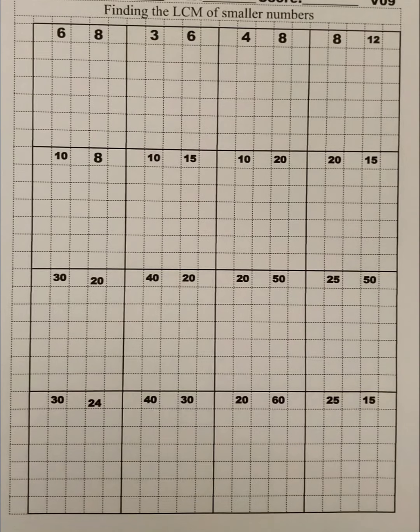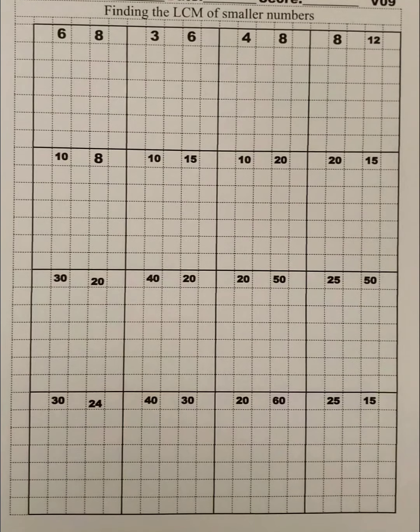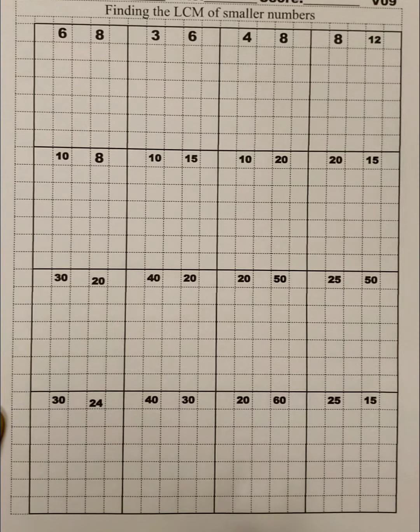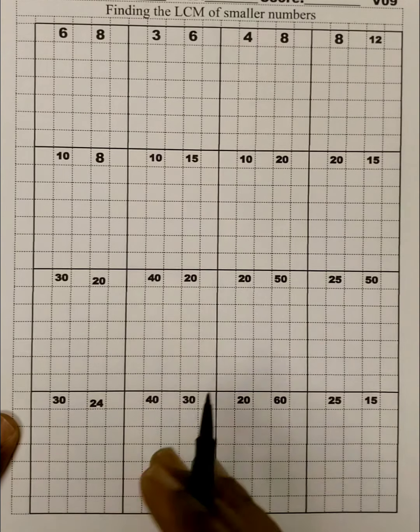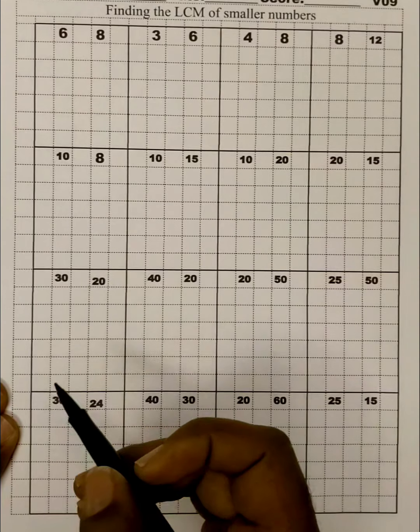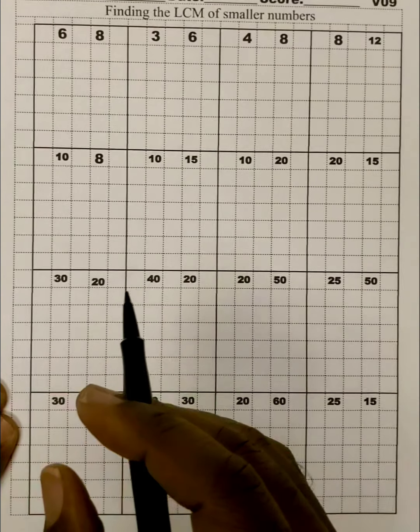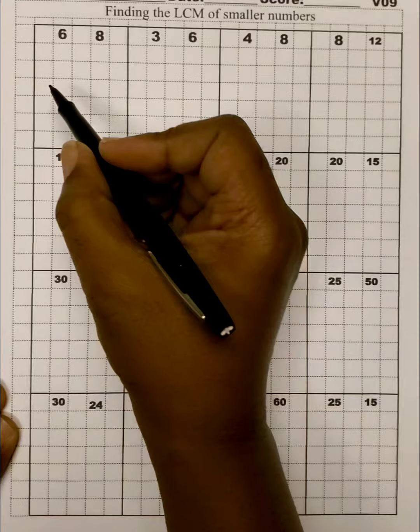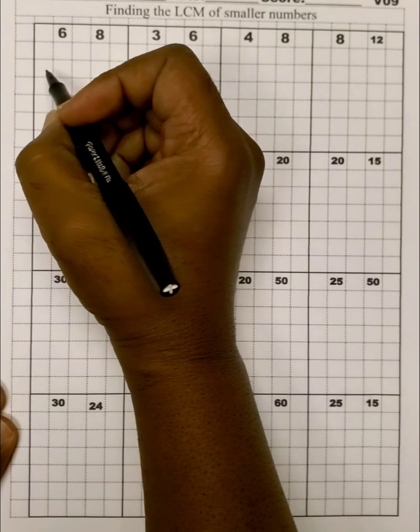Okay, we're going to be finding the least common multiple for small numbers. And one of the fastest ways to find the least common multiples when you have small numbers is simply write down their timetables and find out what they have in common, the smallest of common numbers. Alright, we're going to go through the six timetables here.